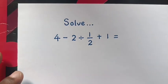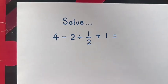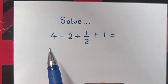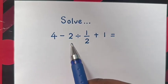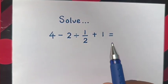Hello, how to solve this BODMAS problem which is asking, solve 4 minus 2 divided by a half plus 1.